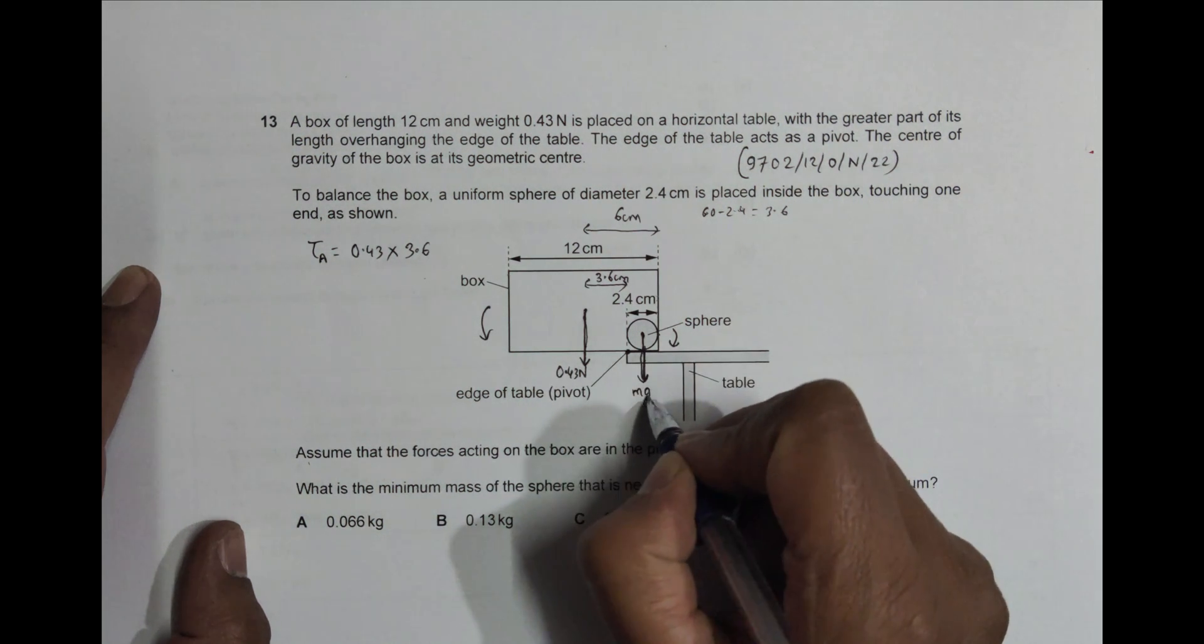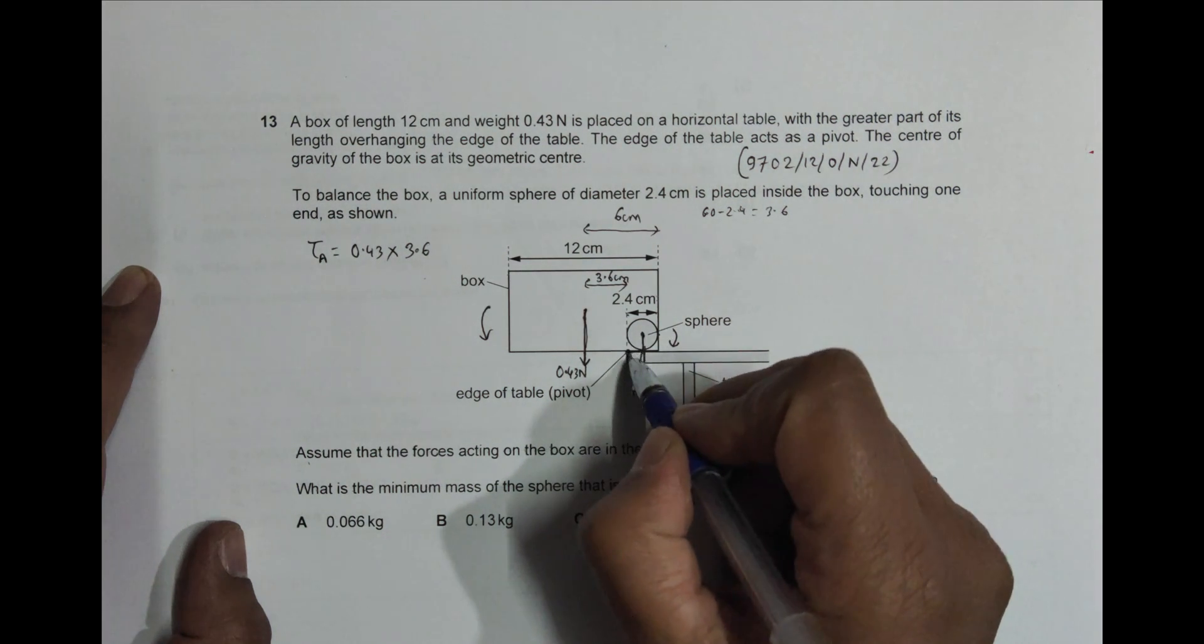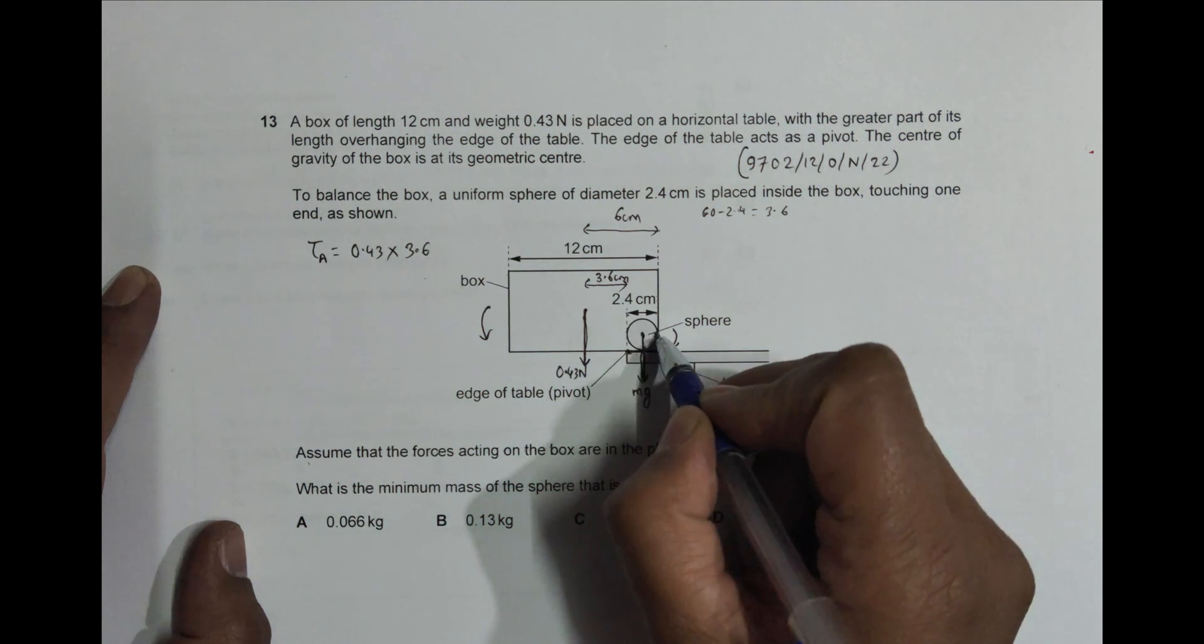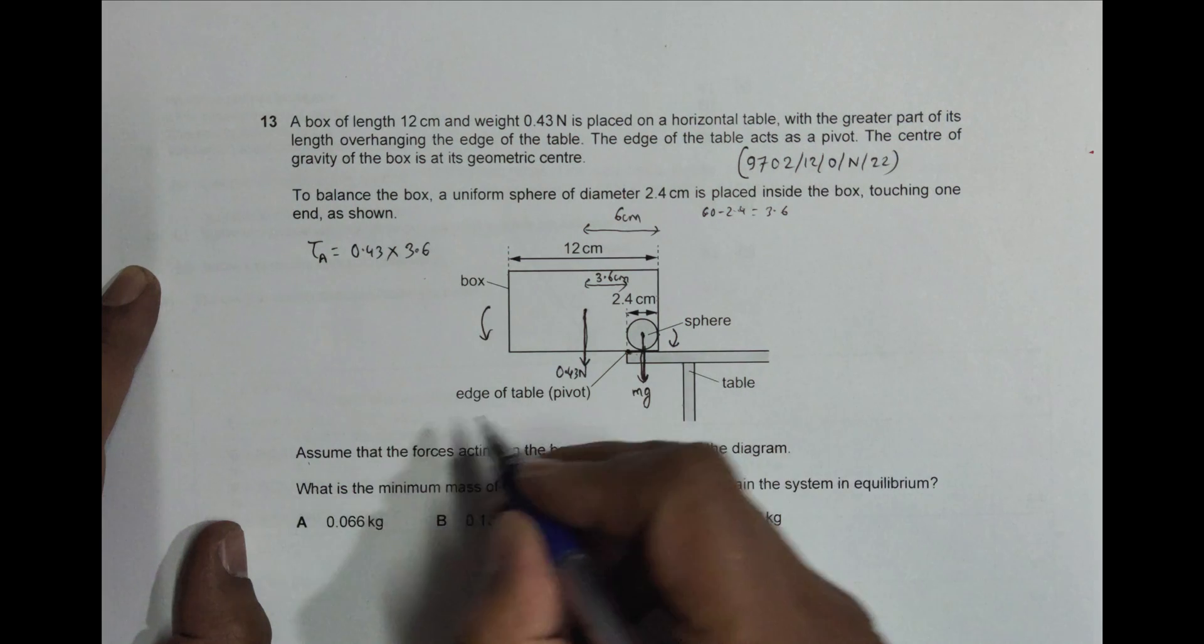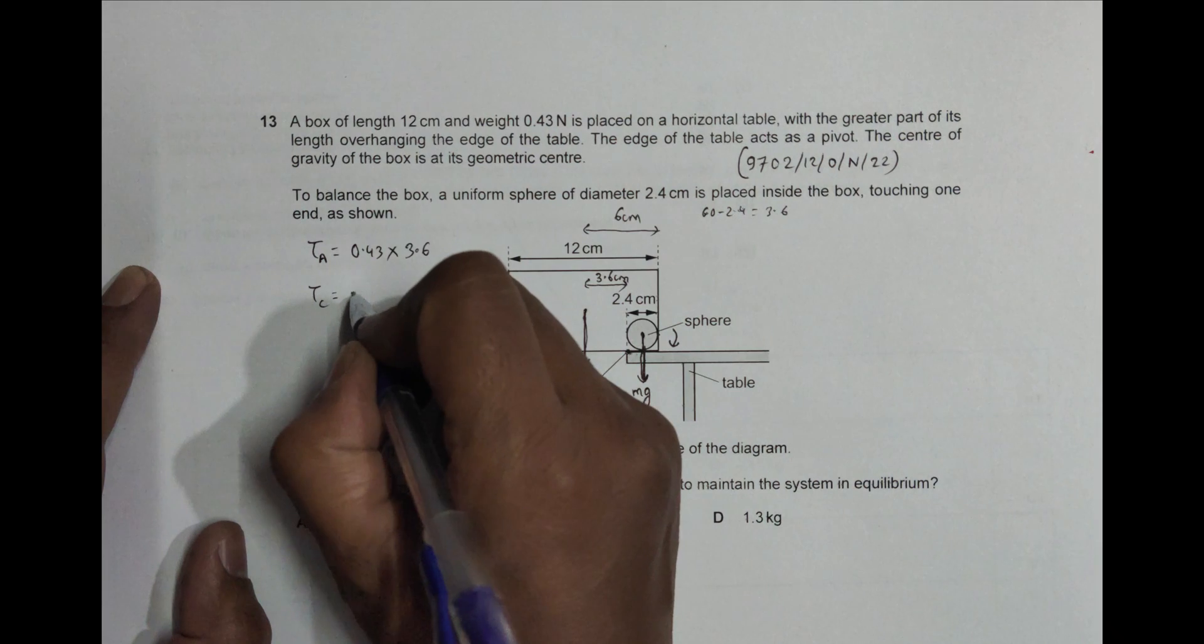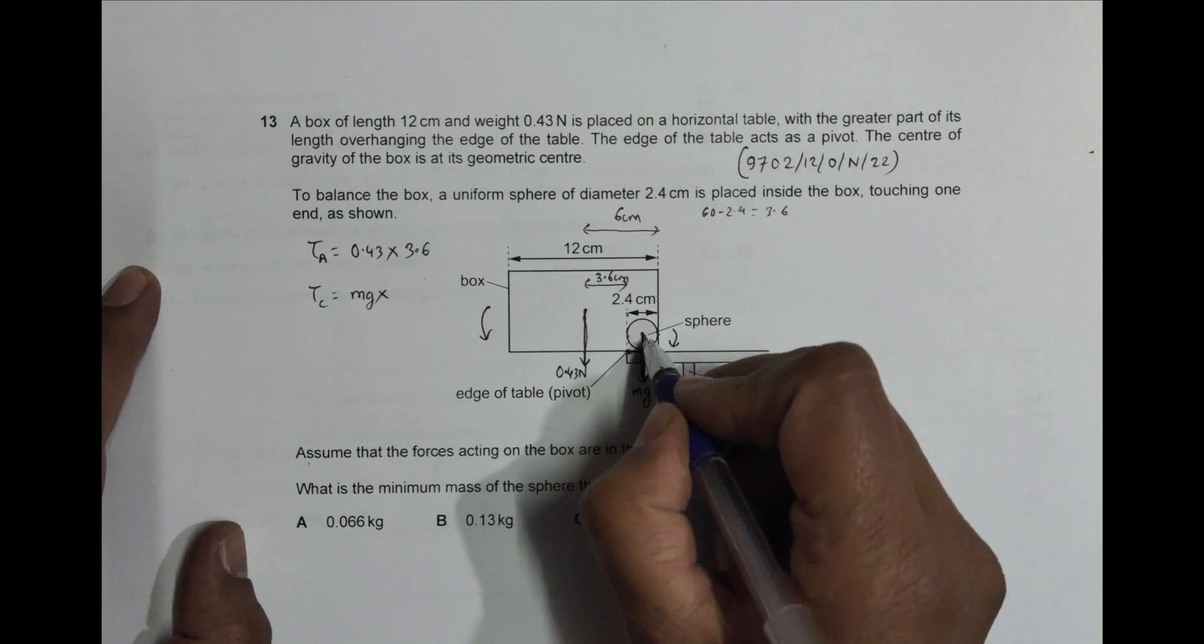Now this mg, the distance of this fulcrum from this line of action should be half of the diameter of this ball. So this is the diameter, it's half. So tau clockwise should equal the weight of the ball, which is mg, into this distance. This is equal to half of the diameter, so it should equal 1.2.